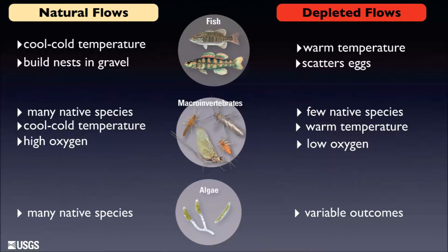In a system where we have modified flows — lower than natural or depleting flows — one of the big things we notice is a major loss of native species. Those native species are often replaced by non-native or invasive species. The species that do survive often thrive in warm water temperatures and low dissolved oxygen; they can get by without a lot of oxygen.